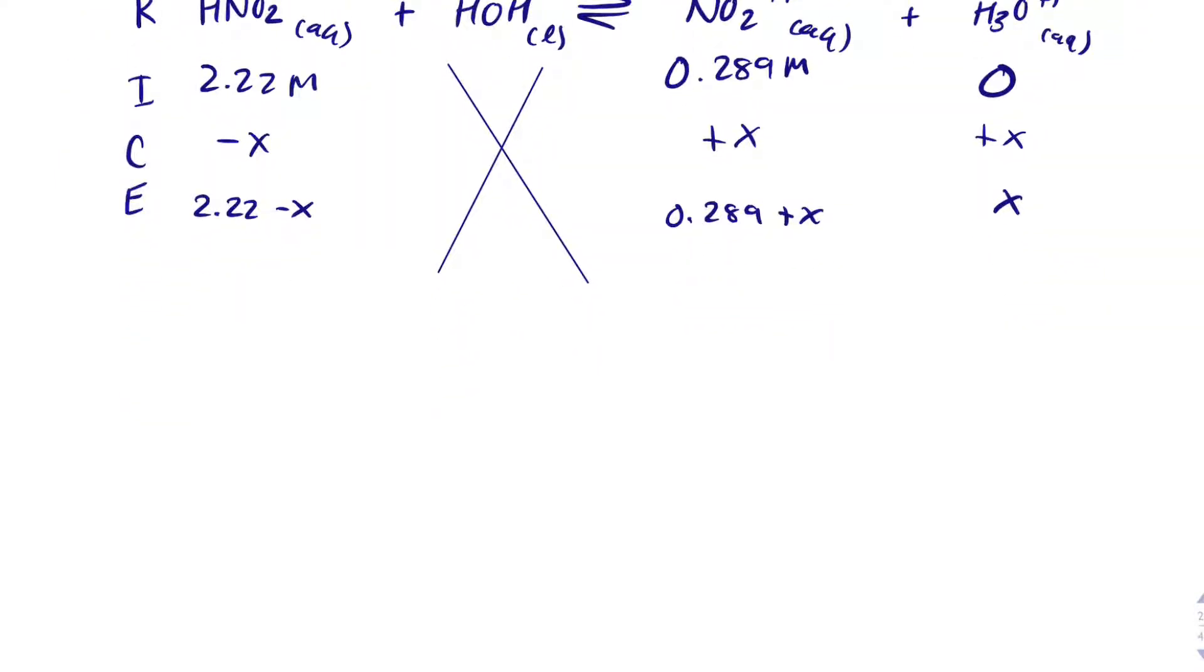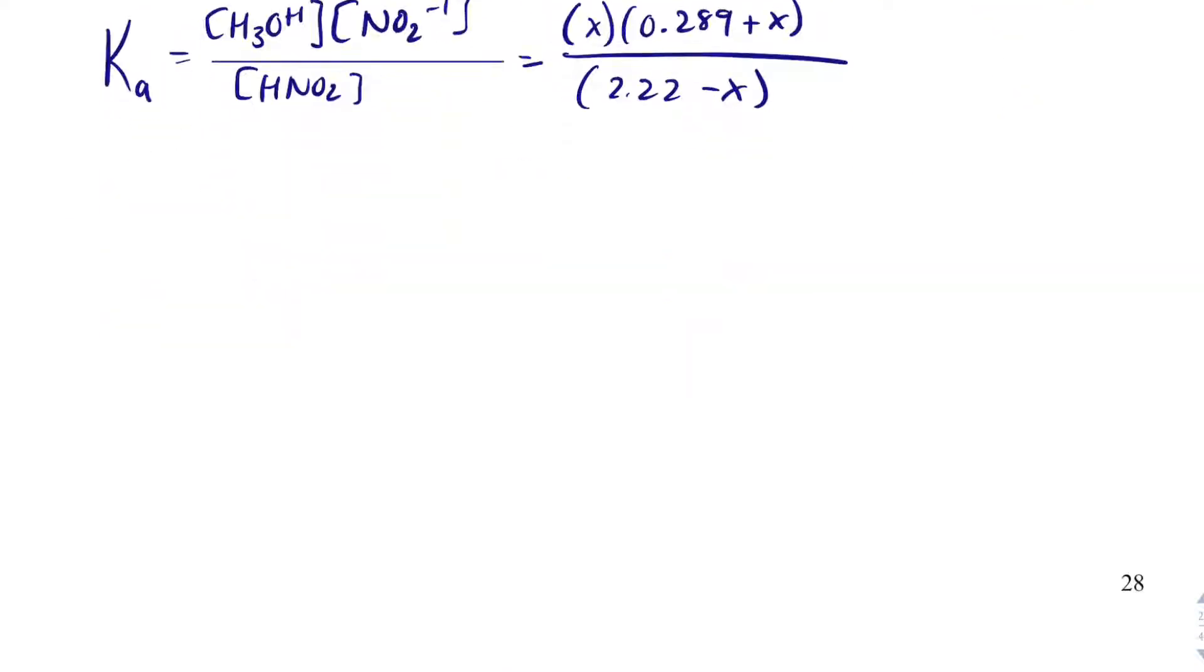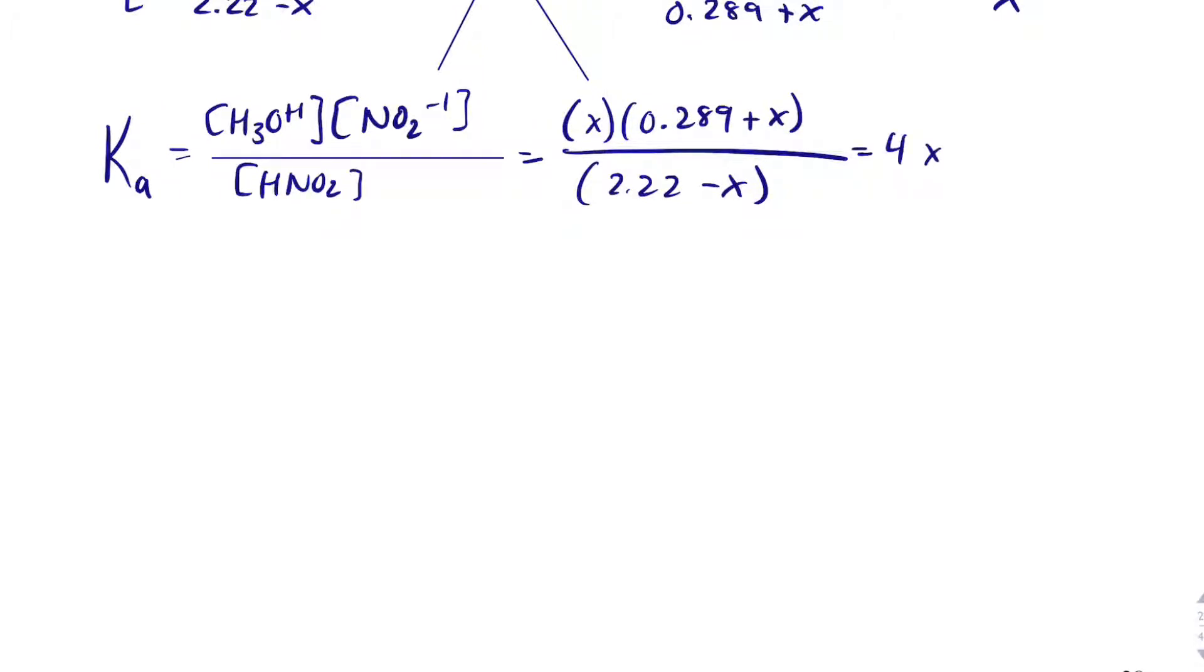We're going to write a Ka expression. Ka equals H3O+ times NO2- divided by HNO2. And that equals not X squared this time, but X times 0.289 plus X divided by 2.22 minus X. And that still equals the same Ka, which is 4 times 10 to the minus 4. This math is pretty ugly. So to make it a little bit easier, we're going to get rid of the minus X and plus X using the 5% rule. We still have this X over here that is still present, so we still have a variable to solve for.